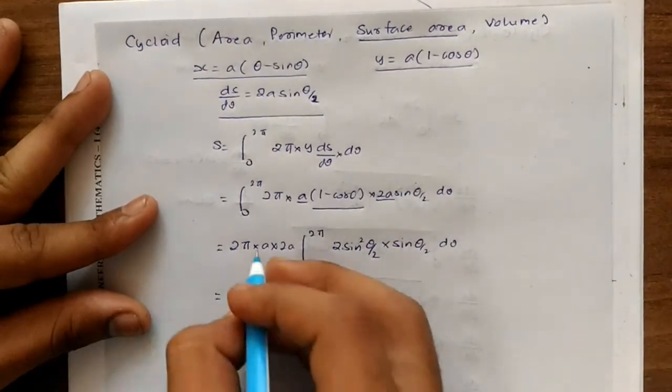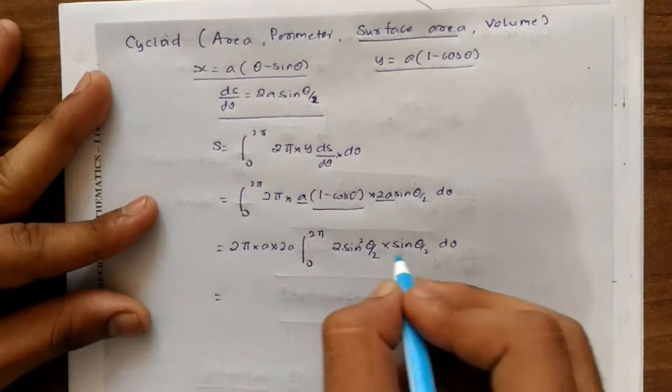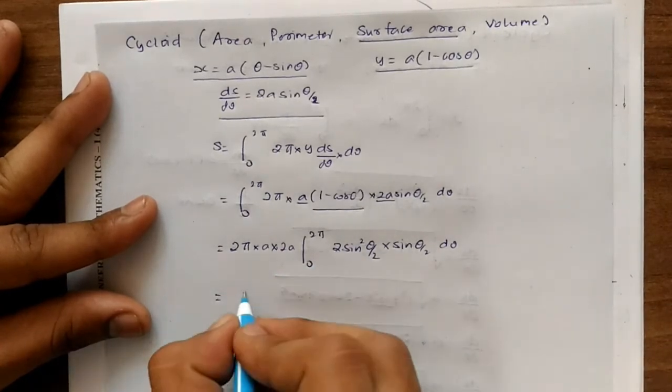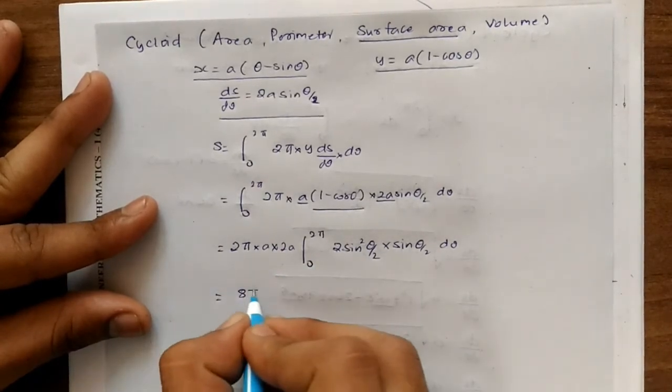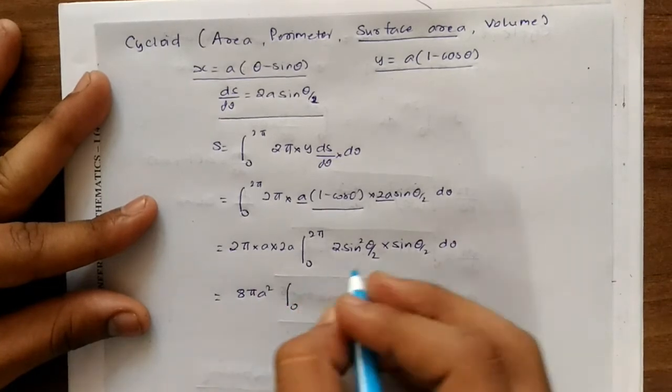So integration from 0 to 2π: 1 − cosθ can be written as 2sin²(θ/2), multiplied by sin(θ/2) dθ. The constants combine: 2, then 4, then 4 and another factor gives 8. So we have 8πa² from 0 to 2π.